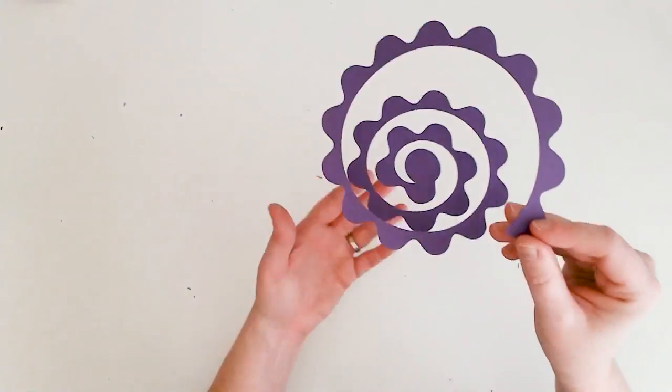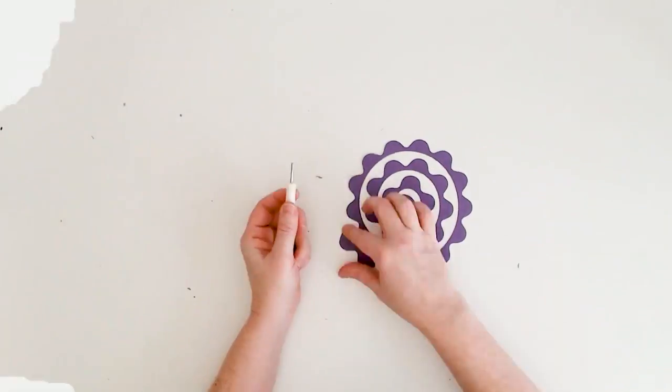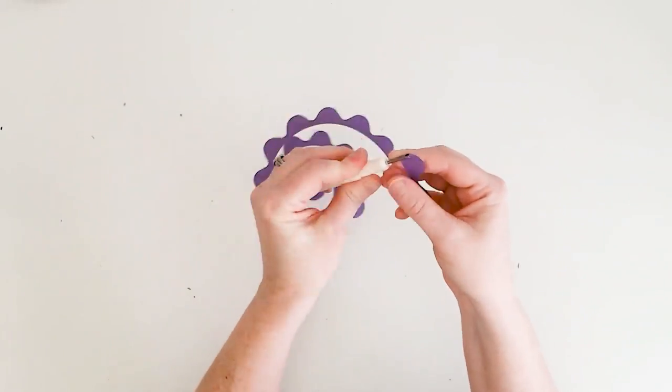Next you'll need a paper quilling tool. Insert the paper quilling tool onto the outside end of the flower template.